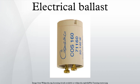An electronic ballast uses solid-state electronic circuitry to provide the proper starting and operating electrical conditions to power discharge lamps. An electronic ballast can be smaller and lighter than a comparably rated magnetic one, and is usually quieter, as magnetic ballasts produce a line frequency hum by vibration of the transformer laminations. Electronic ballasts are often based on the SMPS topology, first rectifying the input power and then chopping it at a high frequency. Advanced electronic ballasts may allow dimming via pulse width modulation or via changing the frequency to a higher value.